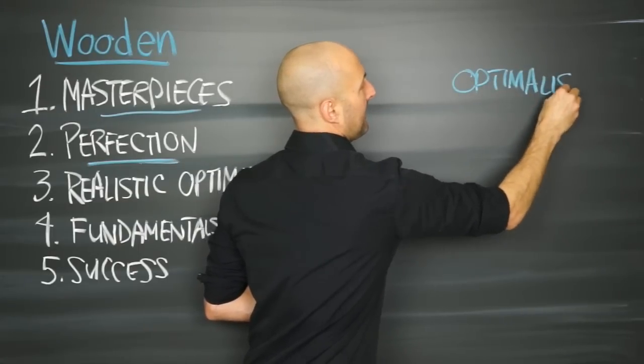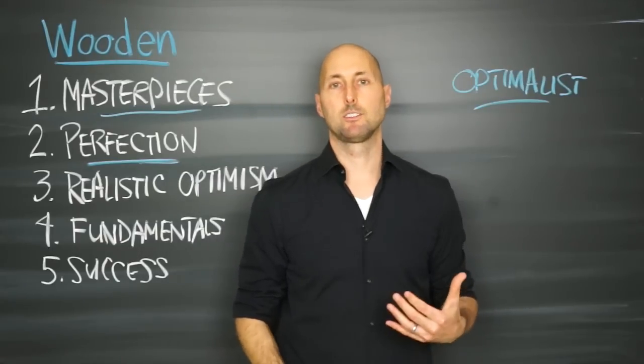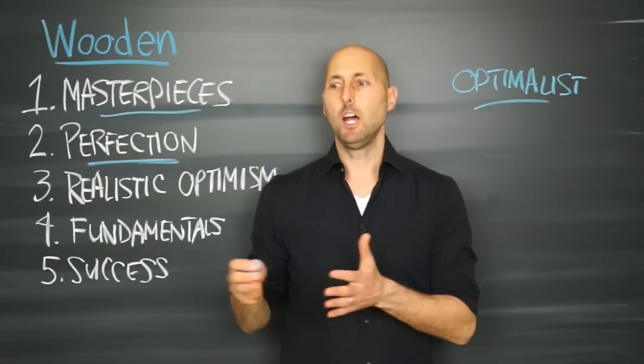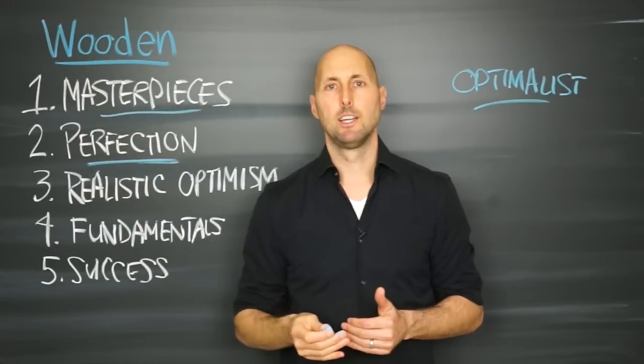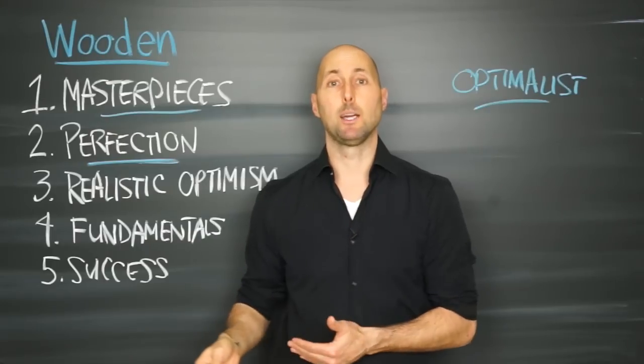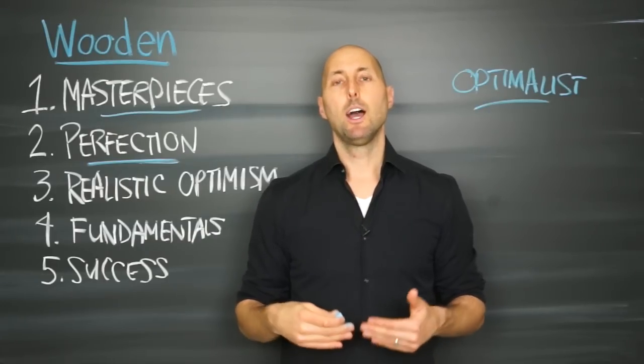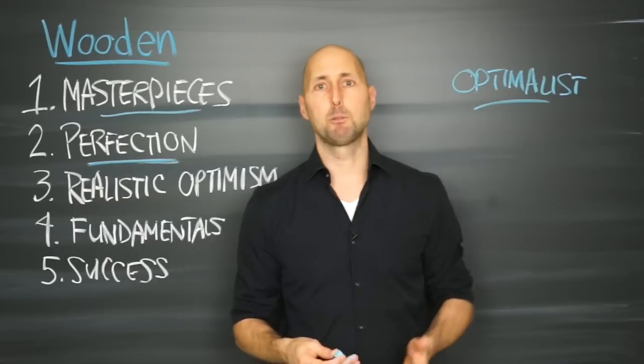Optimalist. An optimalist. That's basically a healthy perfectionist. So Tal Ben-Shahar says an unhealthy perfectionist has really high standards, and they think they can reach them, and they think they need to reach them all the time. He says, no, no, no. A healthy perfectionist is so different, he calls them an optimalist.